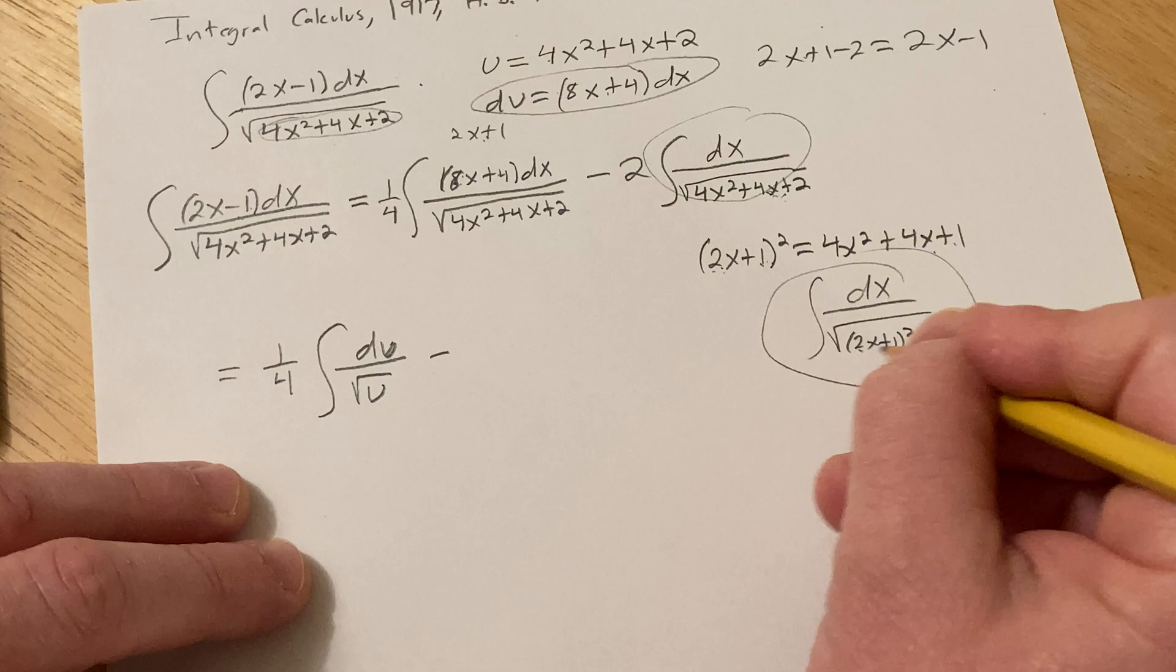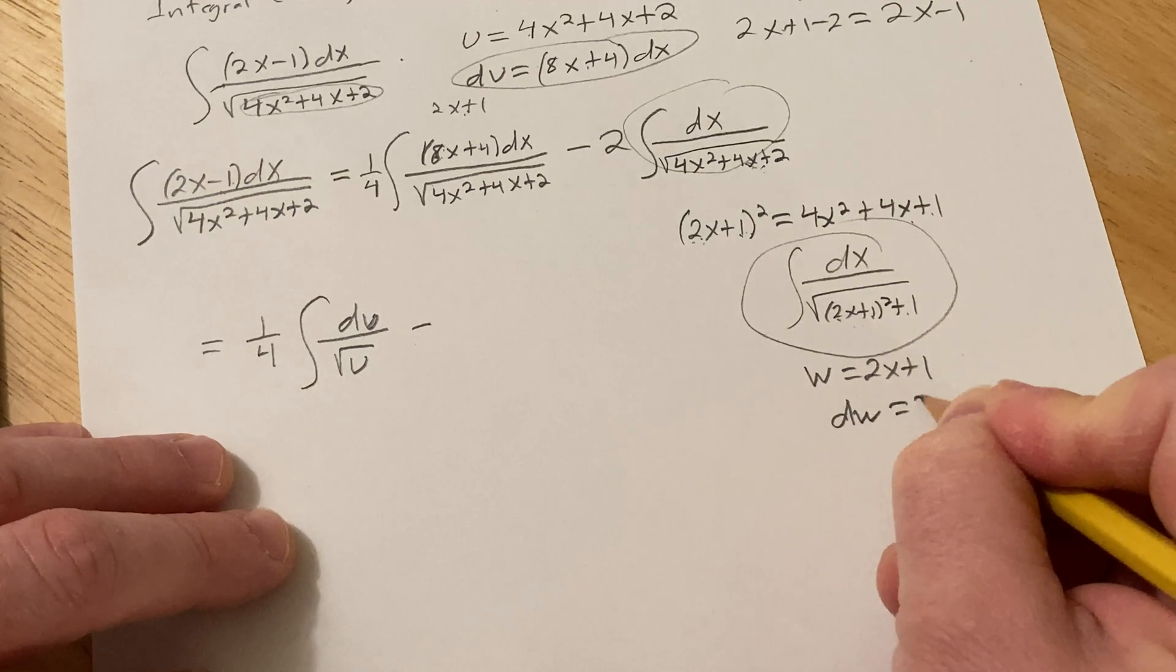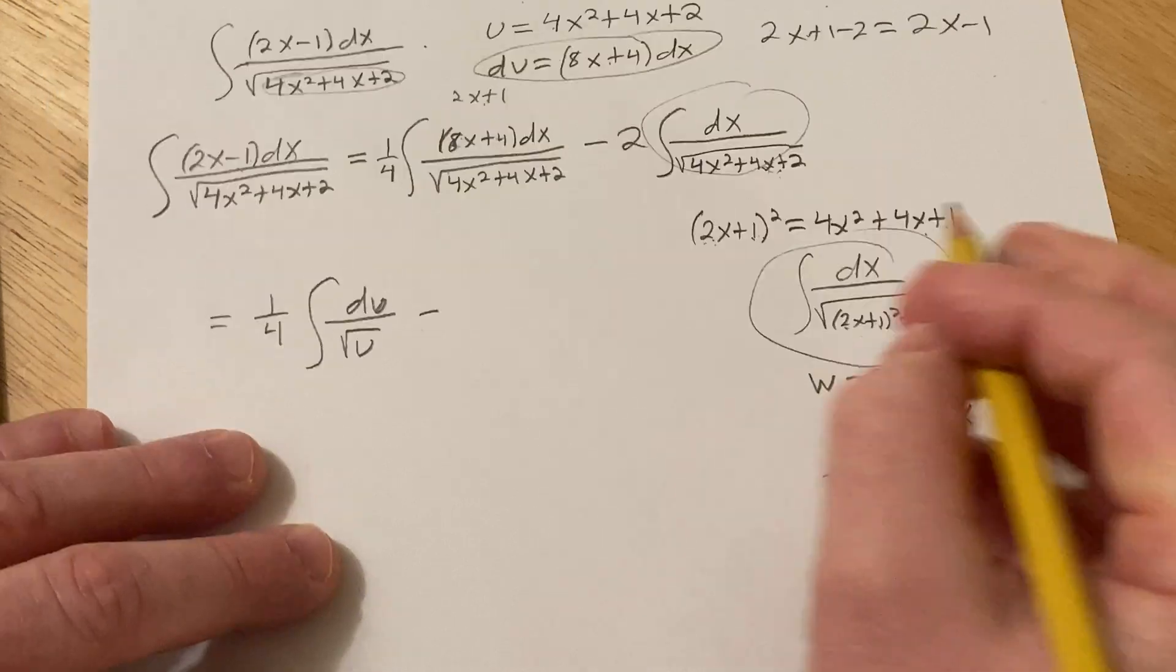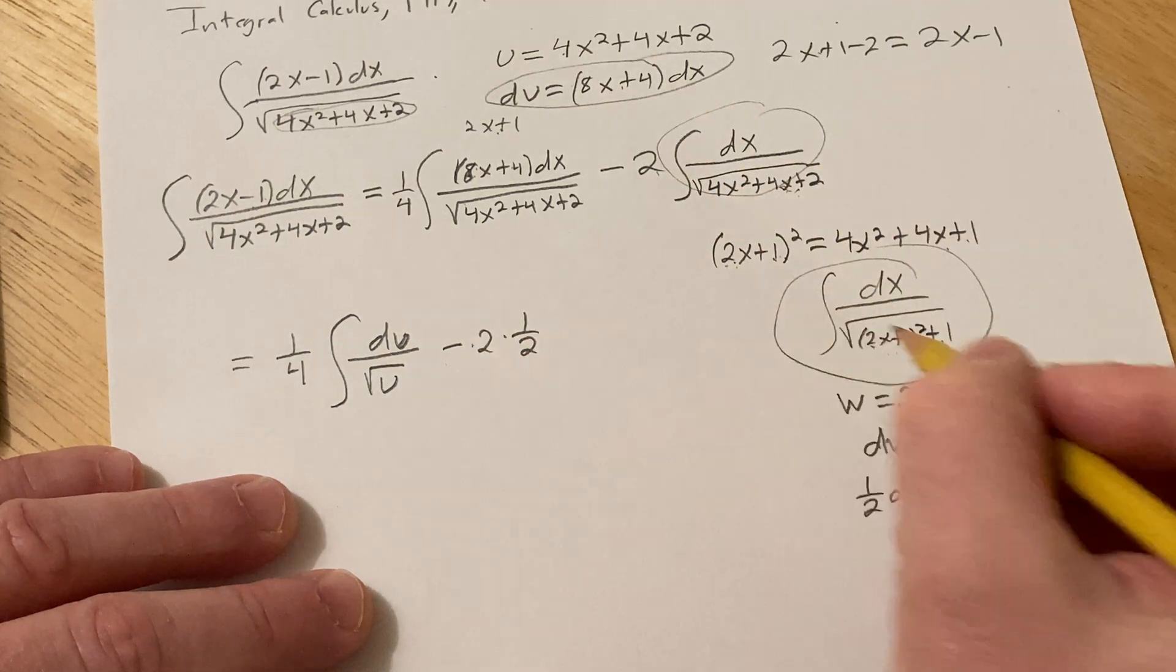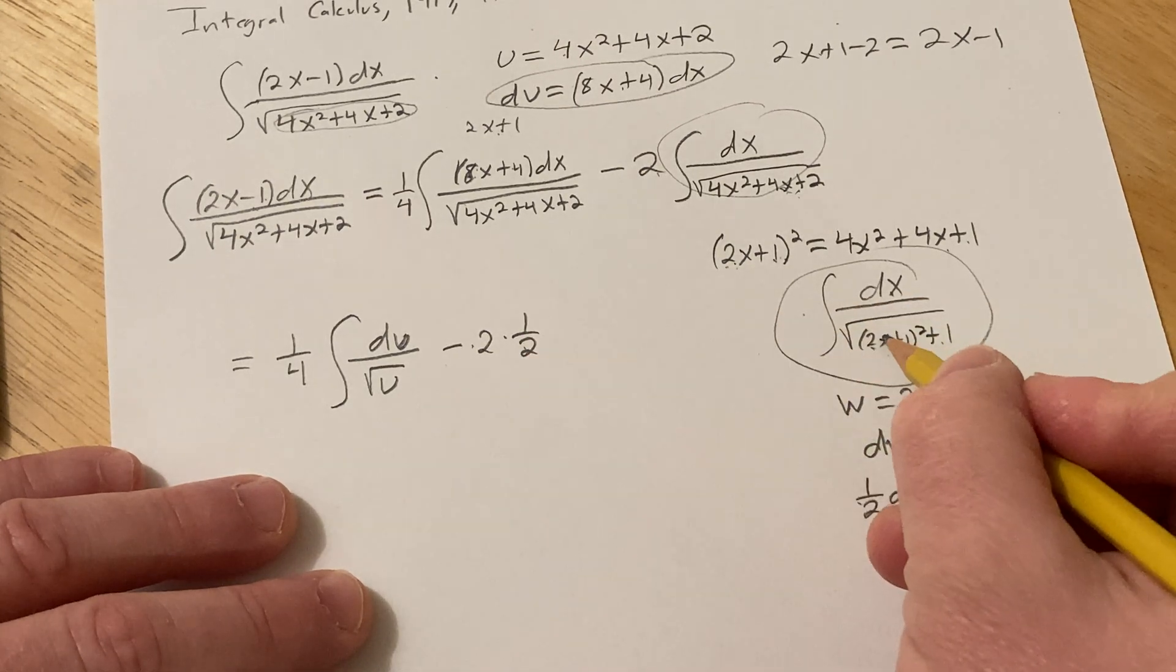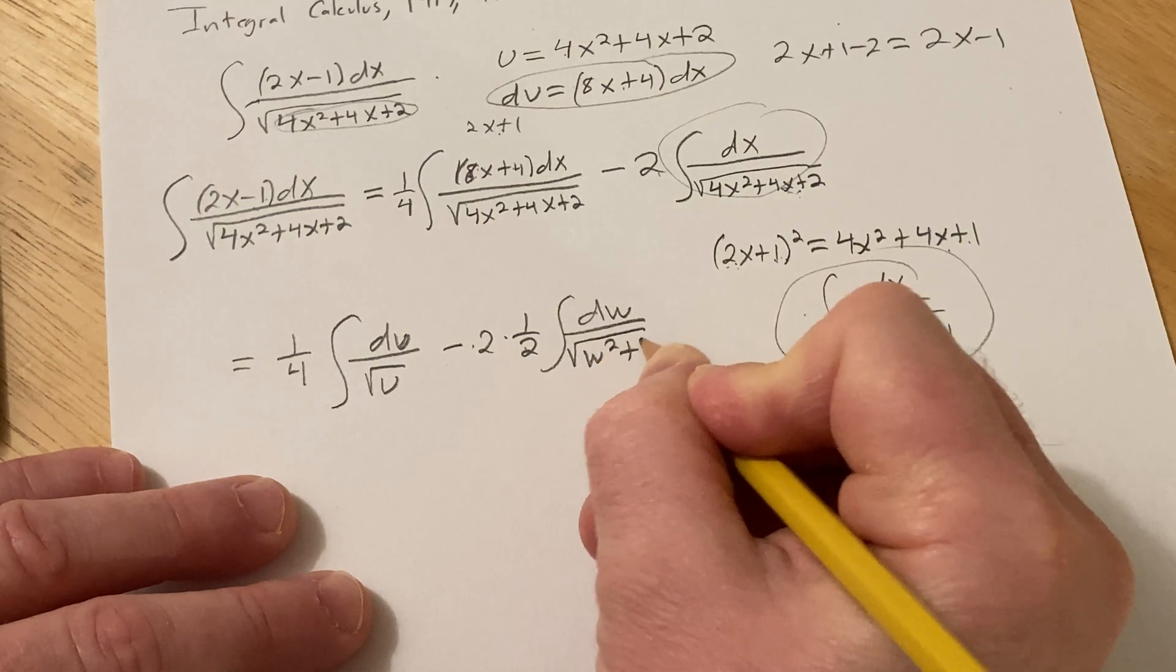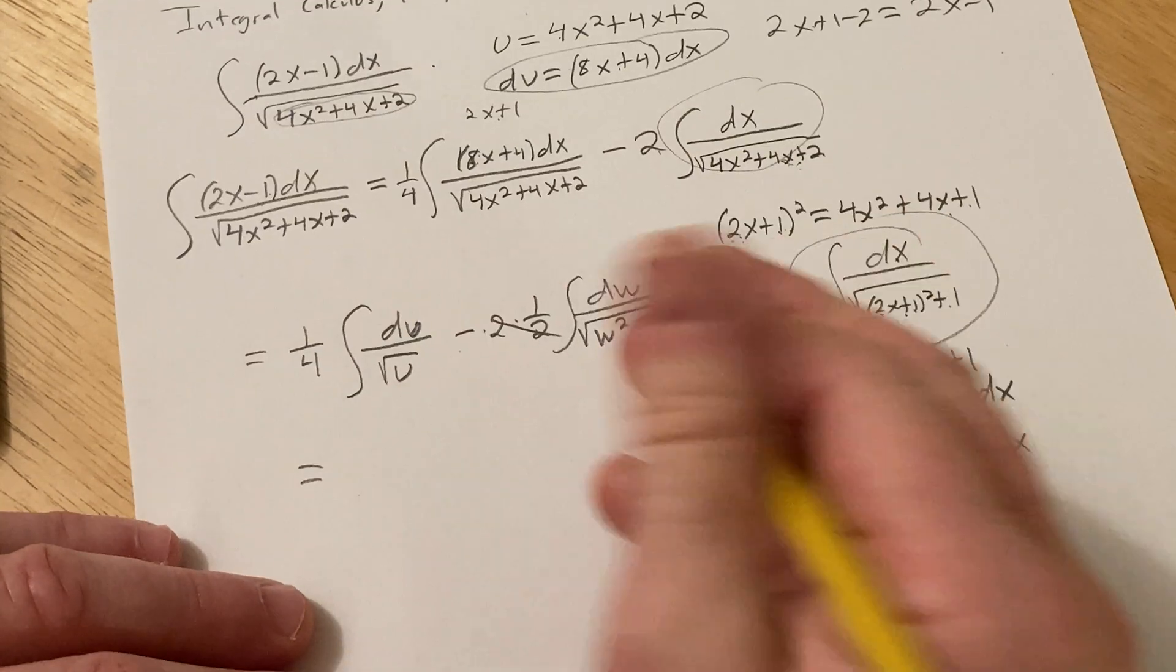Now I'm going to make a substitution here. I'm going to call this w. So dw is 2dx. Basically, now I'm going to divide by 2. So we have 1/2 dw equals dx. So this is going to be minus 2 times 1/2, and then dx is 1/2 dw. So the 1/2 goes there. And this will be dw over (w² + 1). A little bit confusing, but I'm just working through this. I thought I would just film this and maybe someone in the world is working on problems like this.